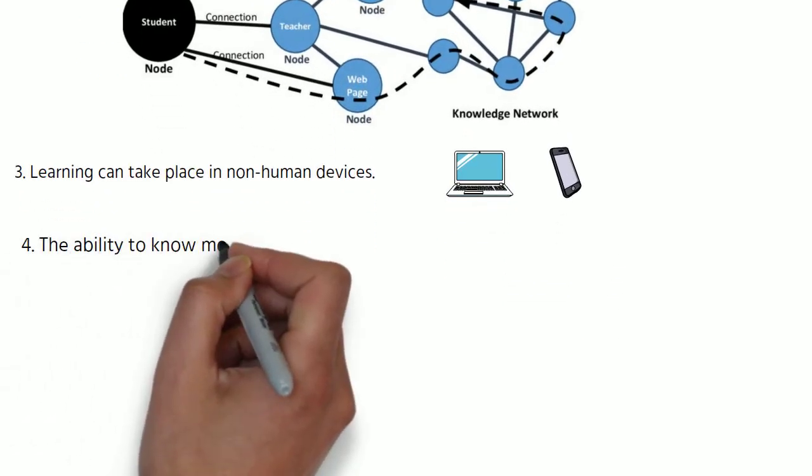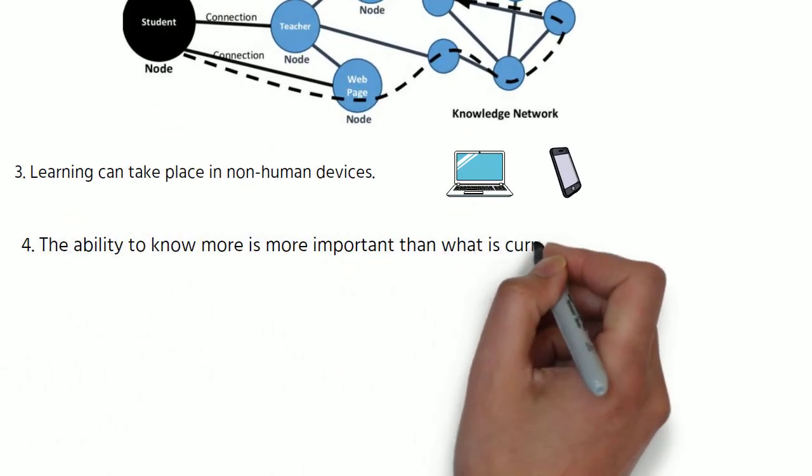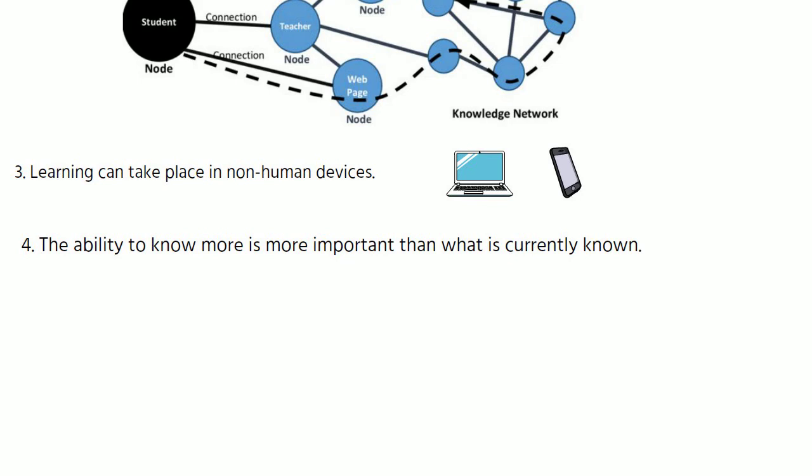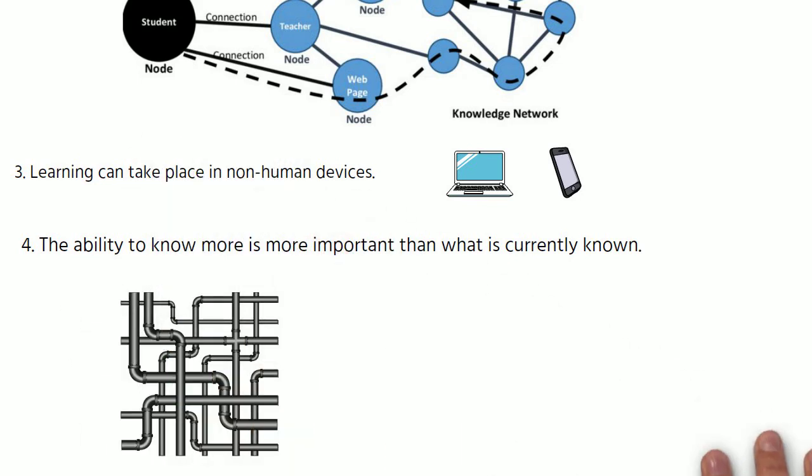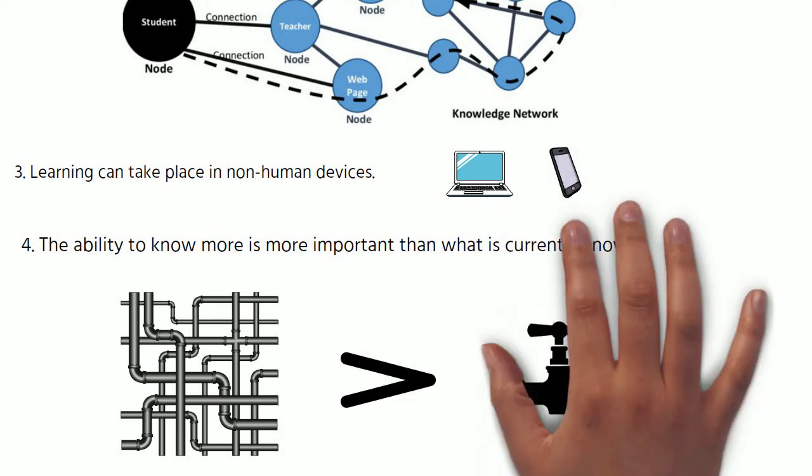Fourth, the ability to know more is more important than what is currently known. If our learning networks are pipelines, then connectivism believes that the pipe is more important than the content within the pipe.